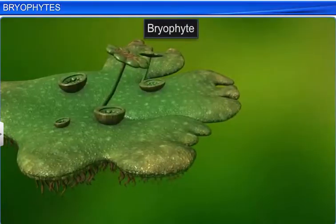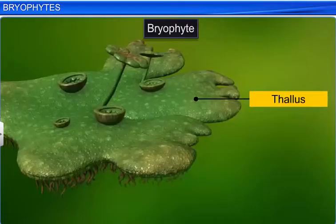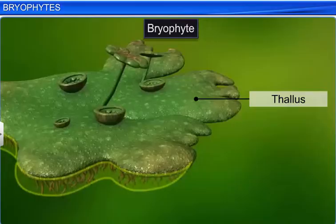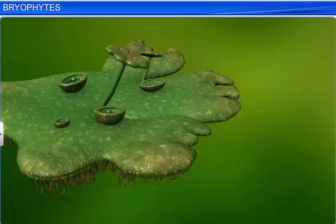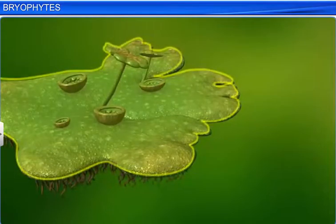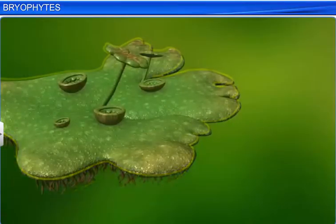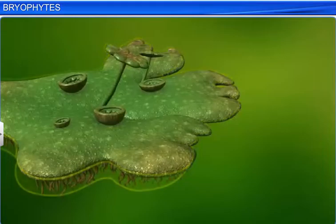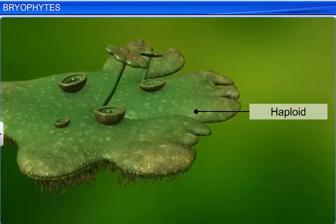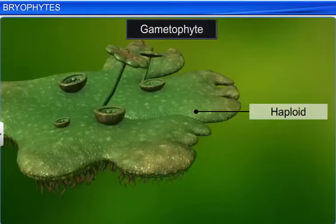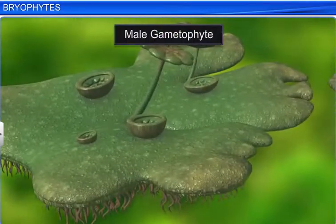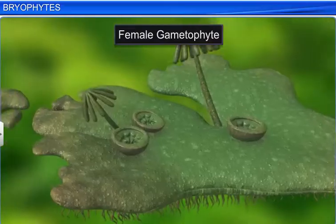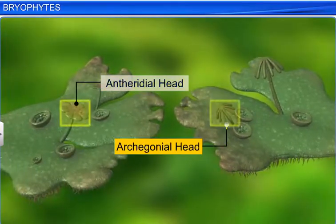Let's now take a look at the different parts of a Bryophyte. The plant body is thallus-like and is either prostrate or erect. It is attached to the substratum by unicellular or multicellular rhizoids. The plant body does not have true roots, stem or leaves, but possesses similar structures. The main plant body of a Bryophyte is haploid, also called a gametophyte, as it produces gametes. The plant body has both male and female gametophytes, which bear the male and female sex organs respectively.